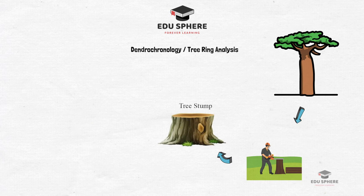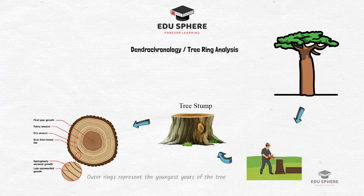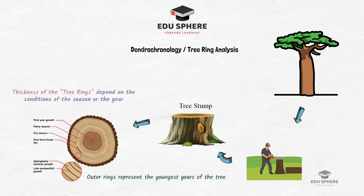We can observe this in any tree stump — a series of concentric rings circling the hardwood and fanning outwards to the edge. The outer rings represent the youngest years of the tree. Not all rings are uniform; some are thinner, some thicker, some light and some dark. Years with adequate precipitation produce wider rings, but years of drought produce much narrower rings.